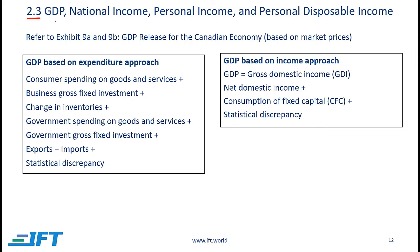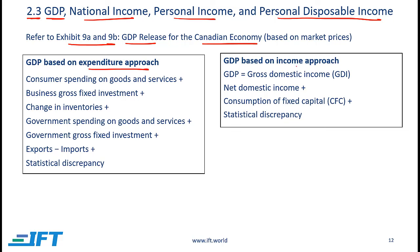We now move to section 2.3, continuing our discussion on GDP and also covering national income, personal income, and personal disposable income. The reference is the Canadian economy. Broadly speaking, there are two ways of calculating GDP: the expenditure approach and the income approach. The expenditure approach is what we've discussed so far and is generally the more popular way, as the data tends to be more easily available compared to the income approach.